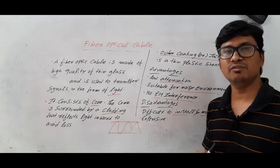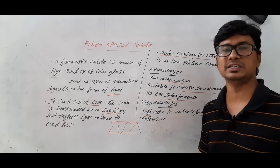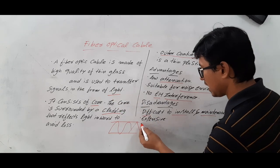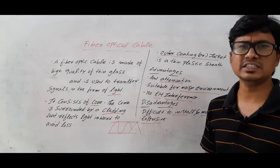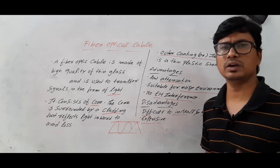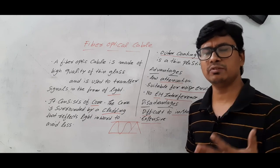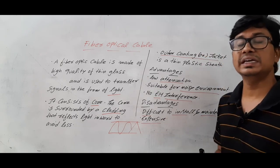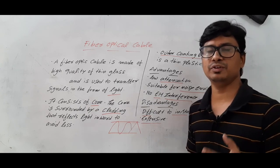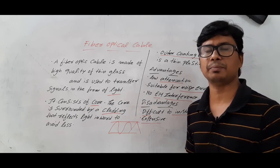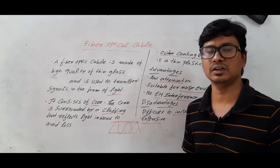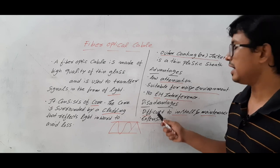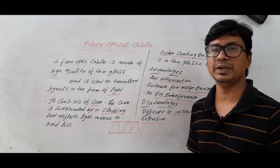The drawbacks of fiber optical cables are that they are difficult to install and maintain. They are also very expensive as compared to twisted pair cables and coaxial cables. If the fiber cuts, joining them again is very difficult. So the main drawbacks are that it is very expensive and very difficult to install and maintain.